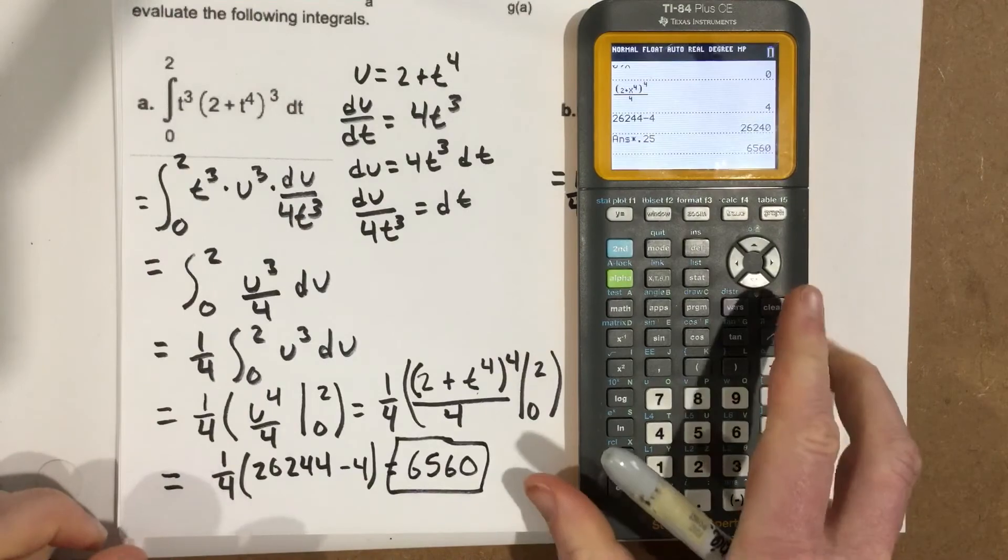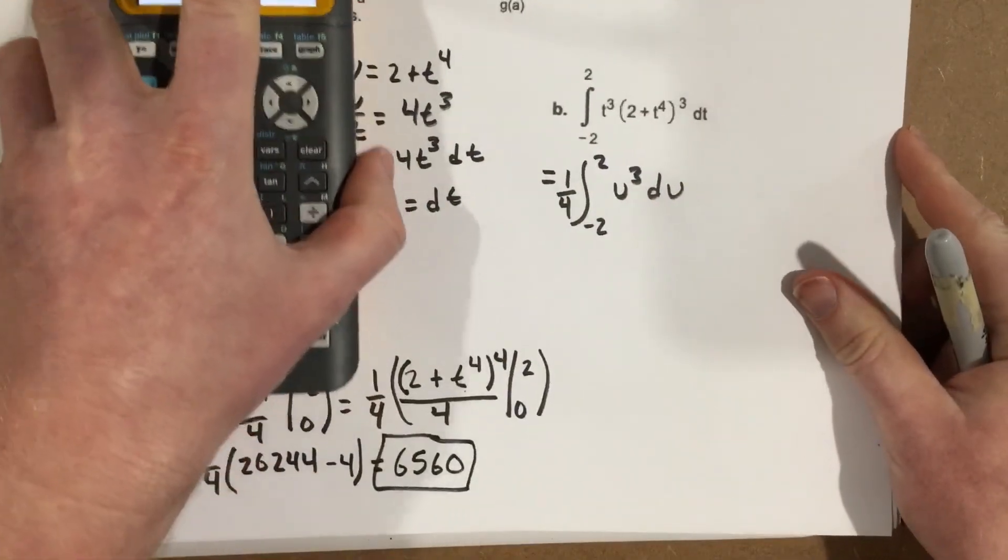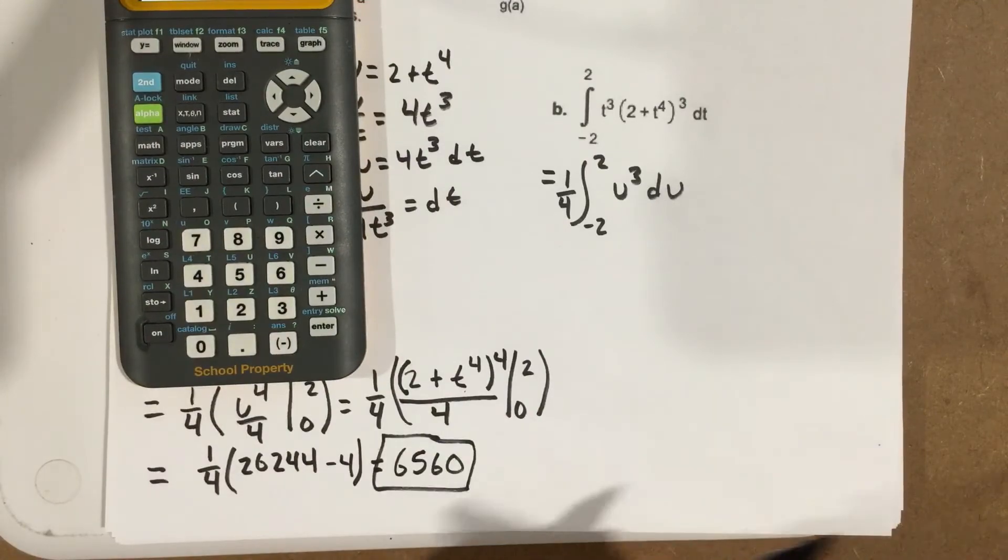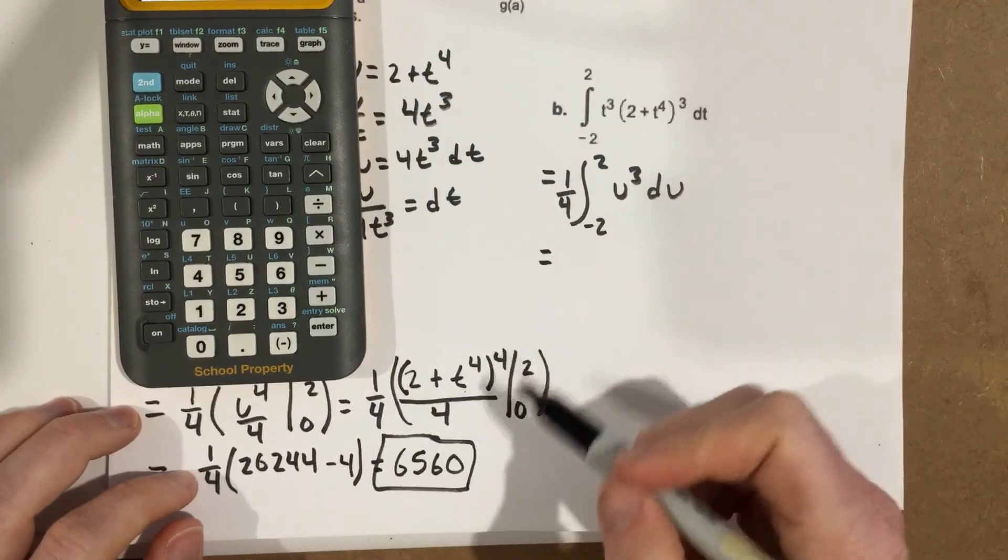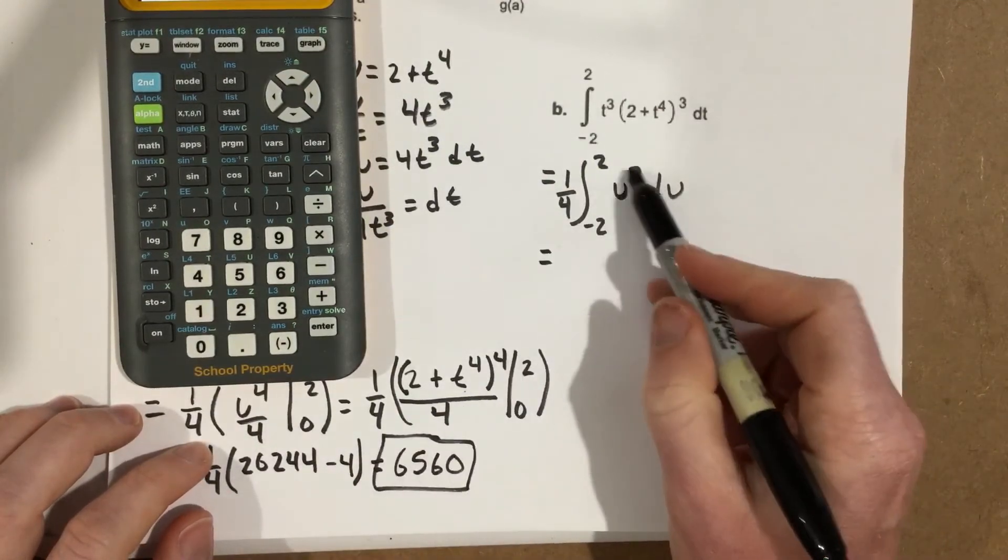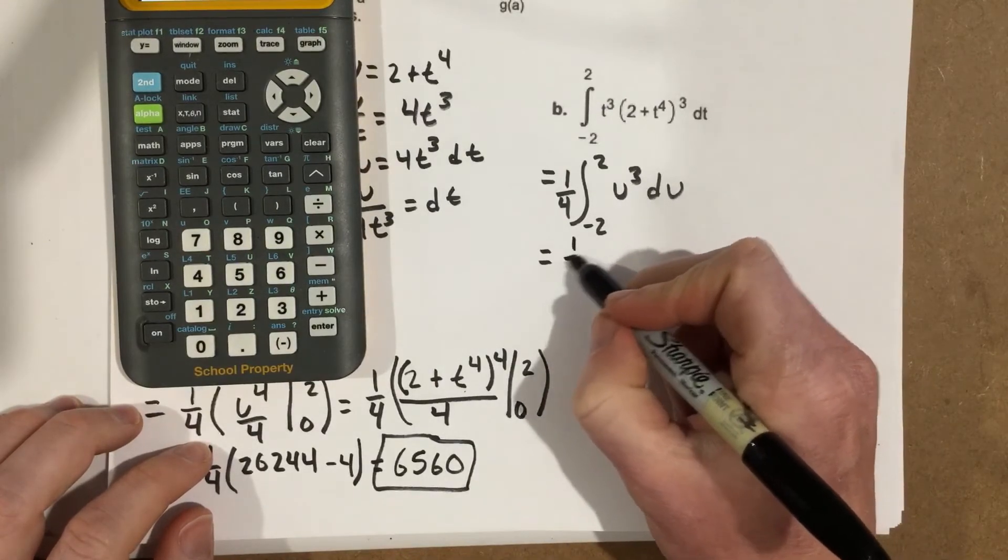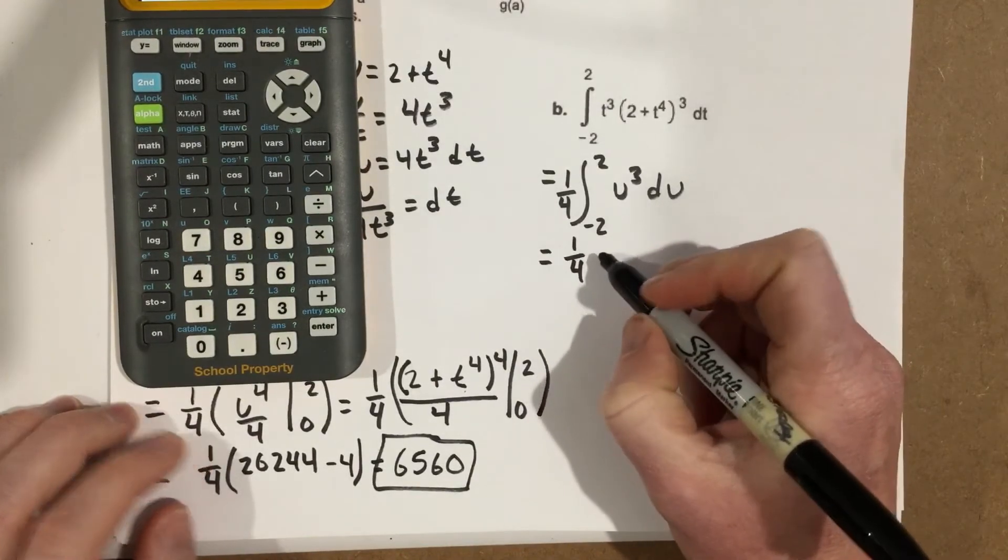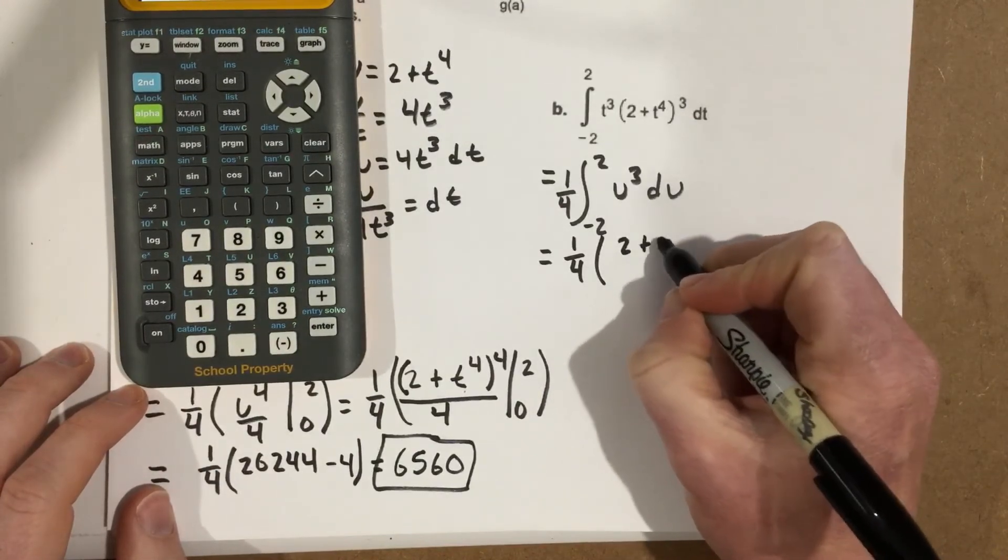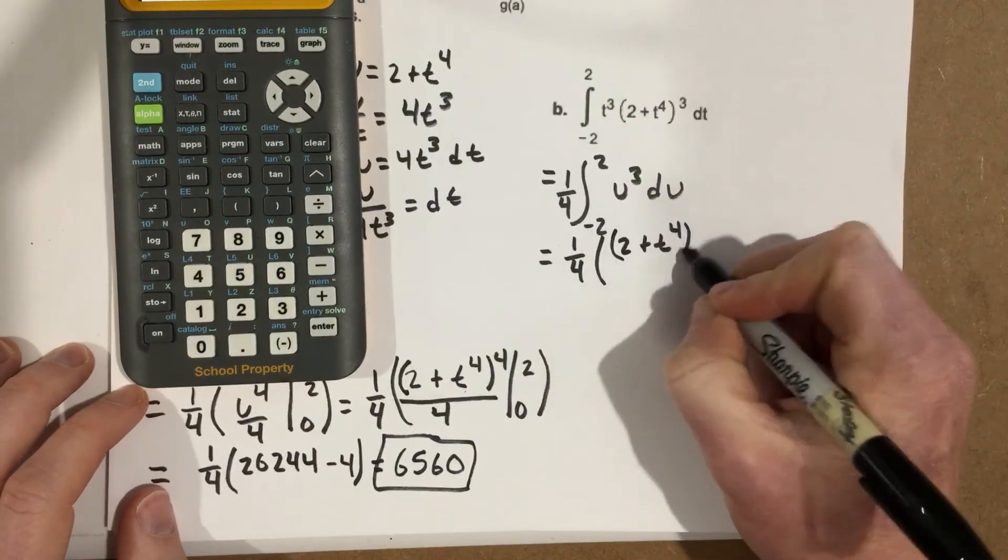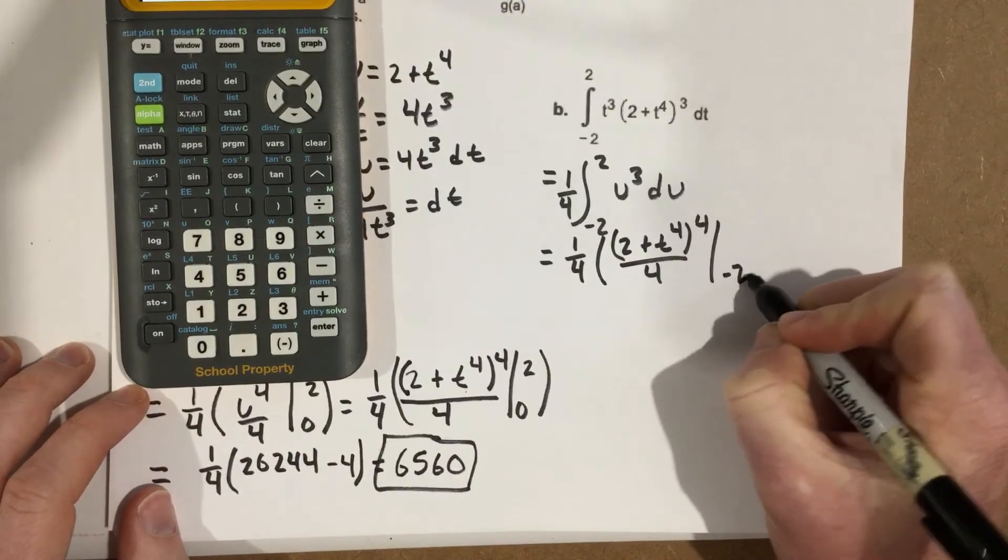So, then I can go on to part B. Part B is going to be pretty quick and easy as well. If I apply, now, my anti-derivative, just like I did down here, so do the anti-derivative of this, I end up in the same spot, so I have 1 4th, parenthesis, this would be 2 plus t to the 4th, to the 4th, over 4. This time, though, I'm evaluating it from negative 2 to 2.